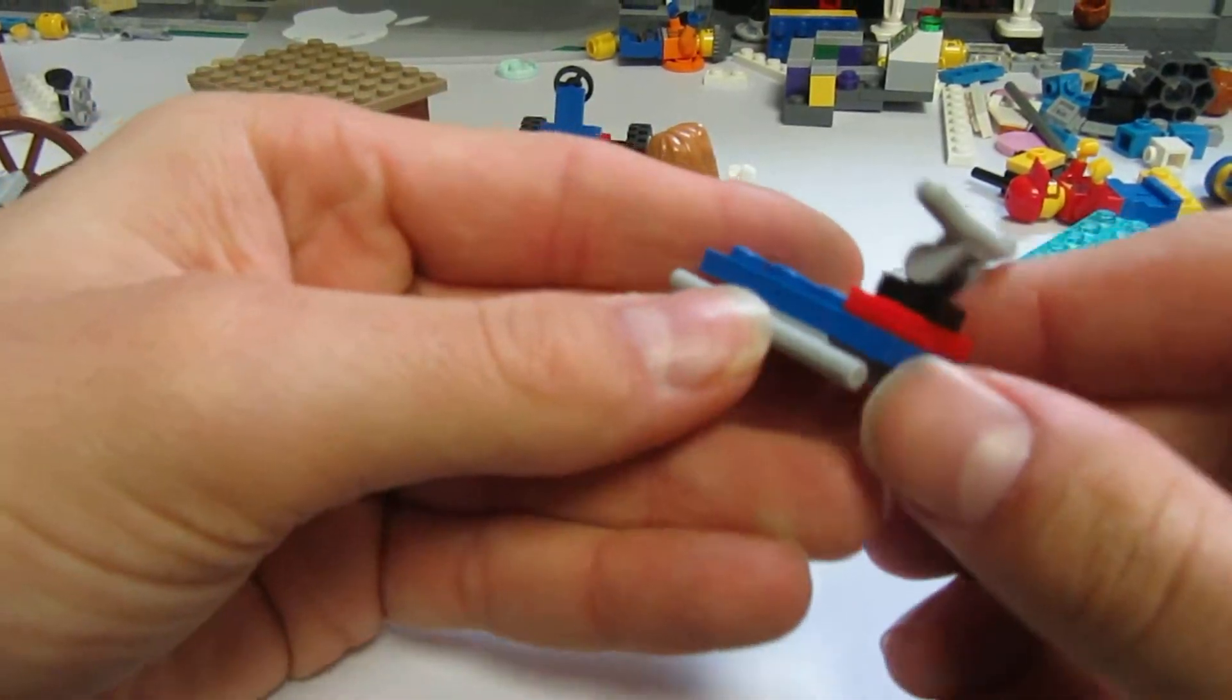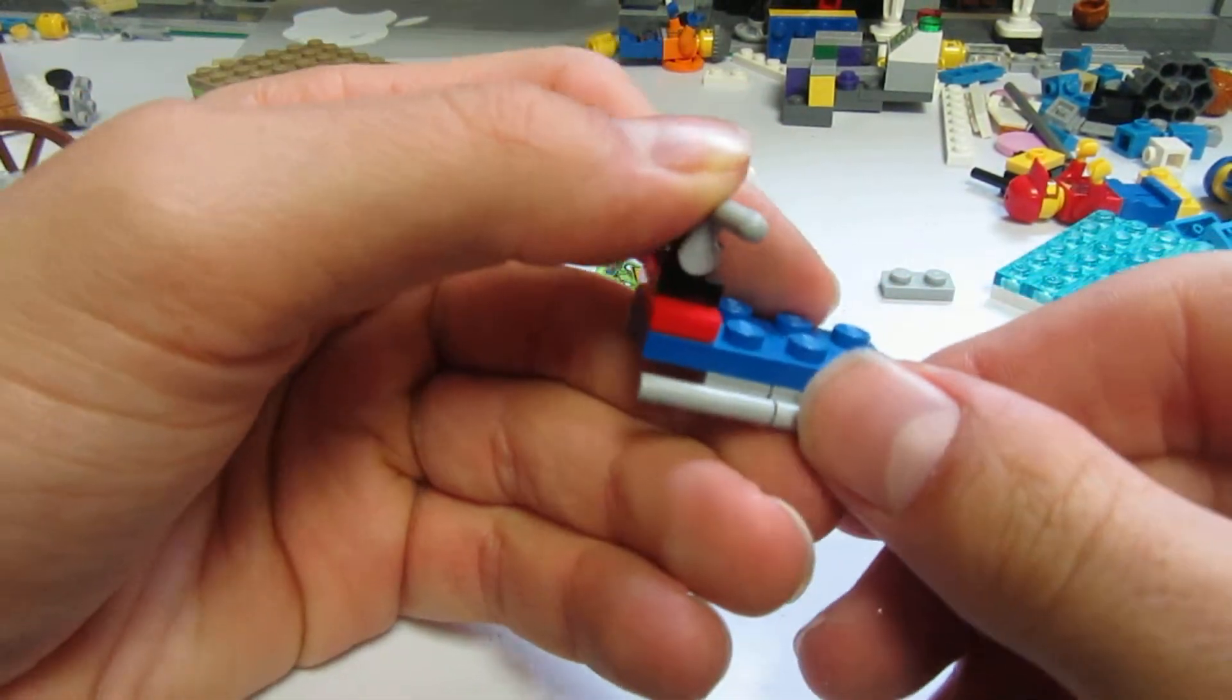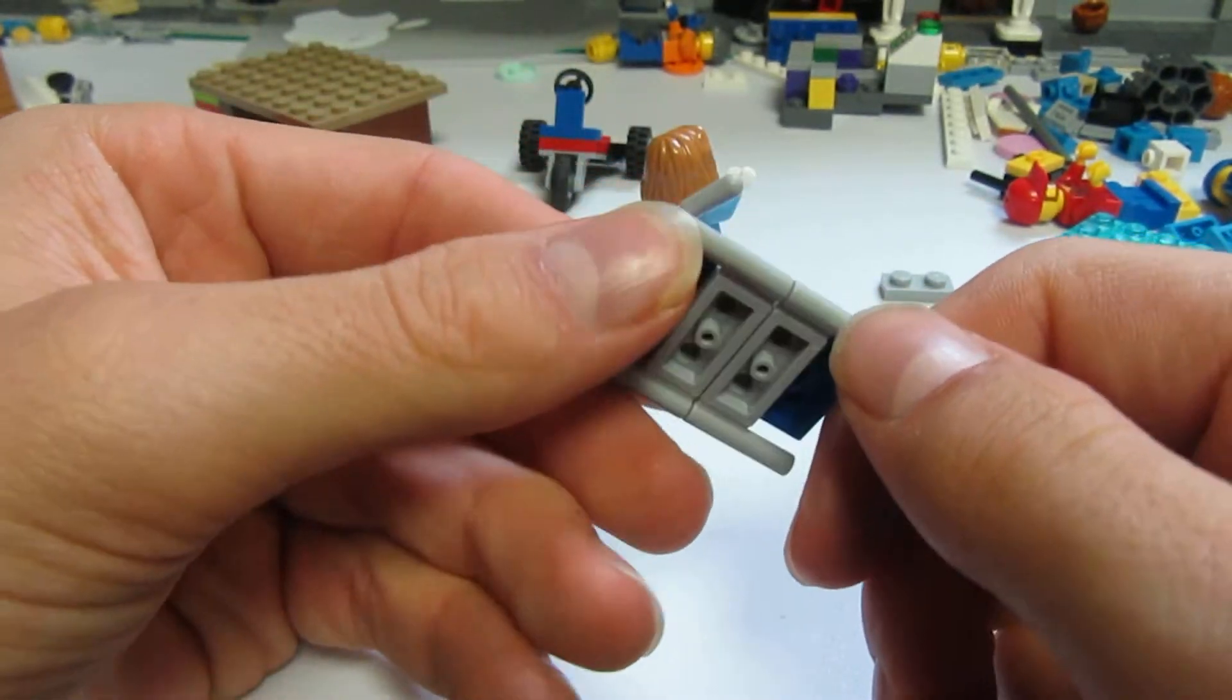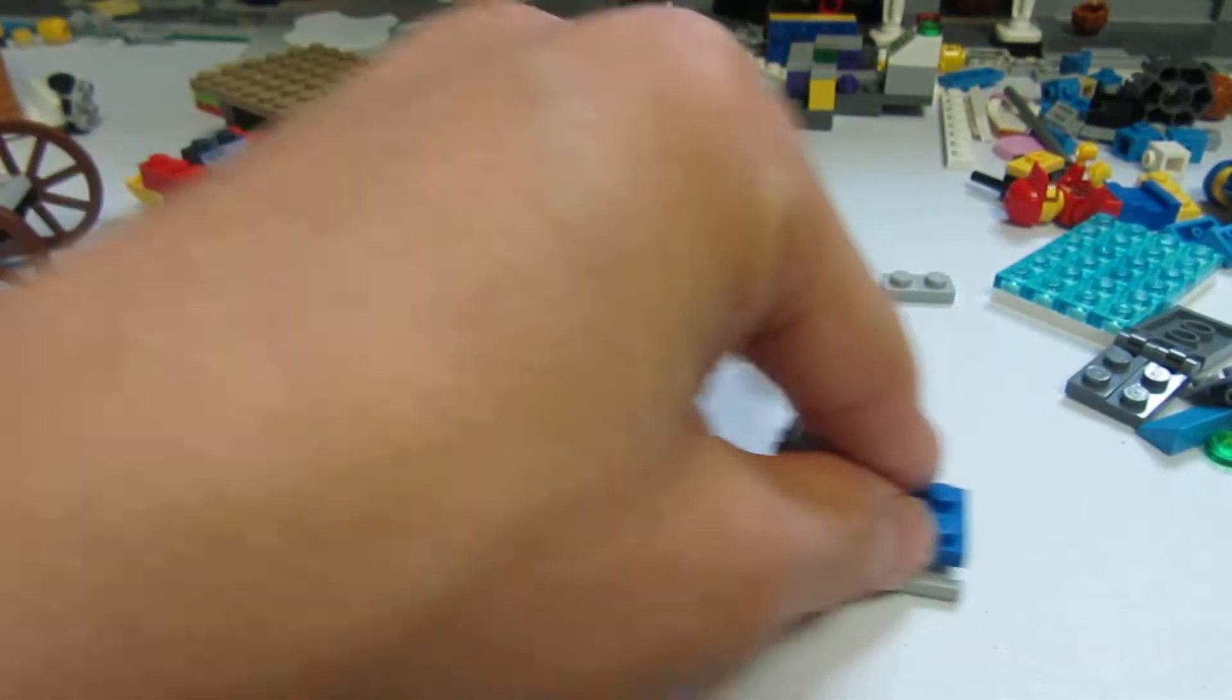But here it is, the sleigh I built. It's blue and red and black and gray, there it is.